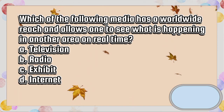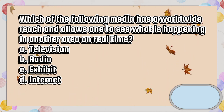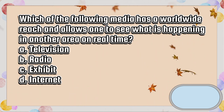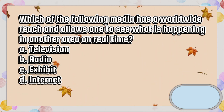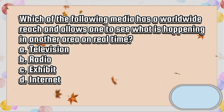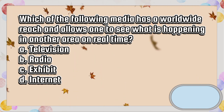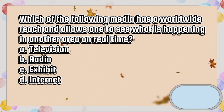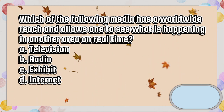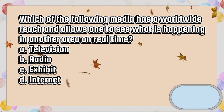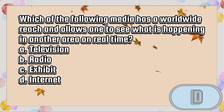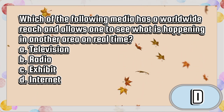Which of the following media has a worldwide reach and allows one to see what is happening in another area in real-time? A. Television. B. Radio. C. Exhibit. D. Internet. The answer is letter D.